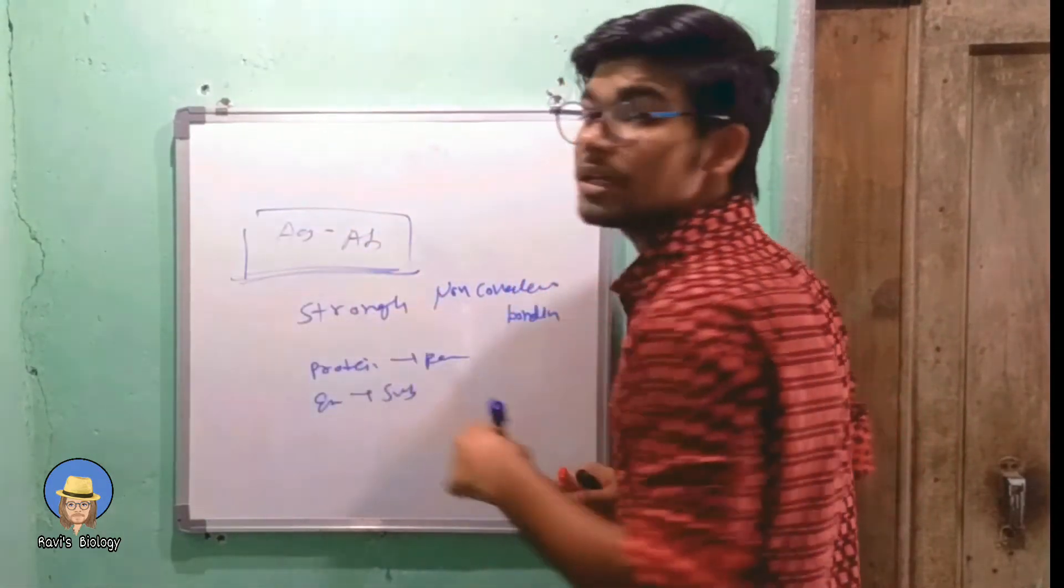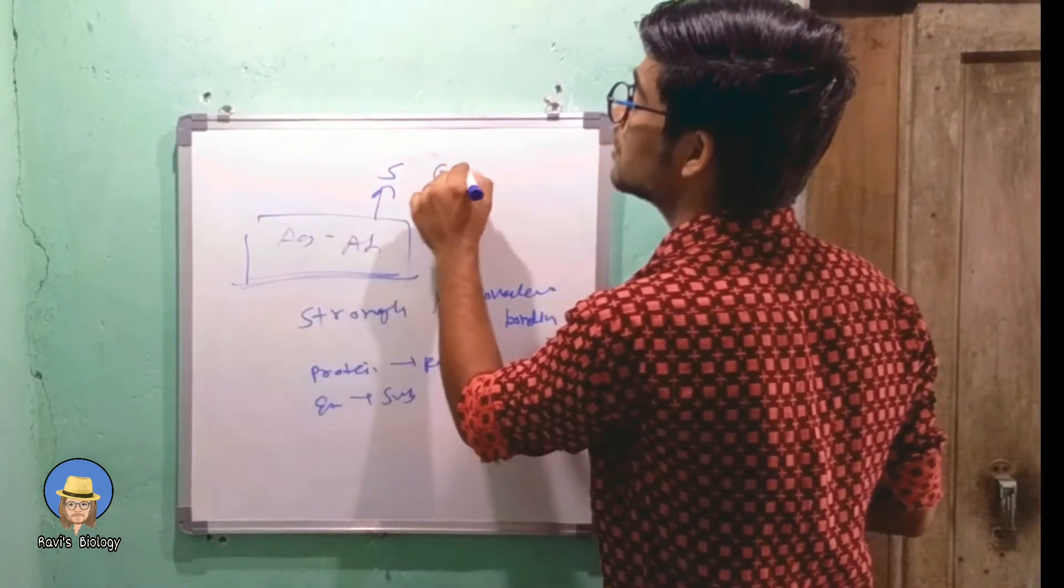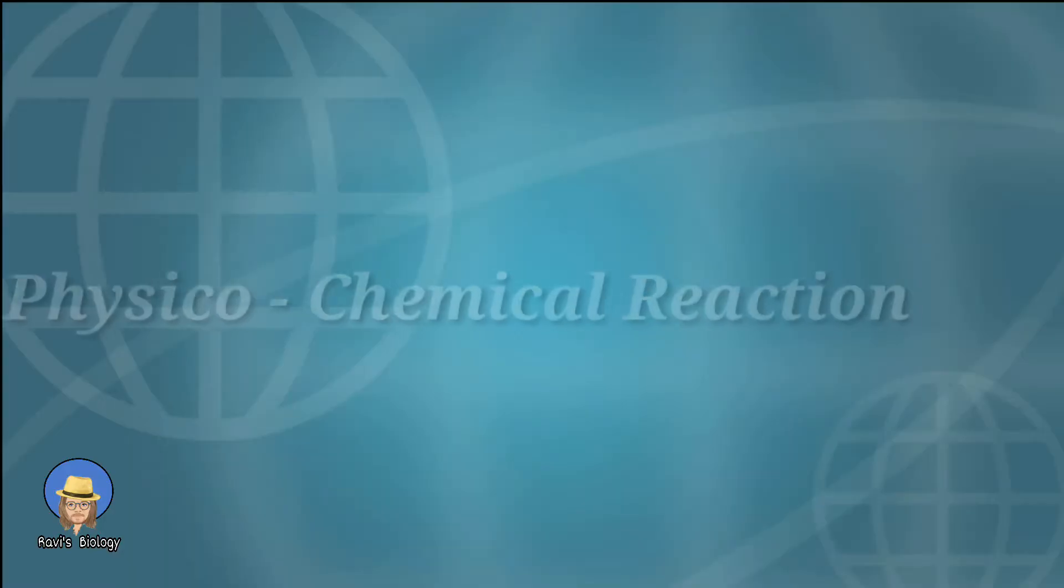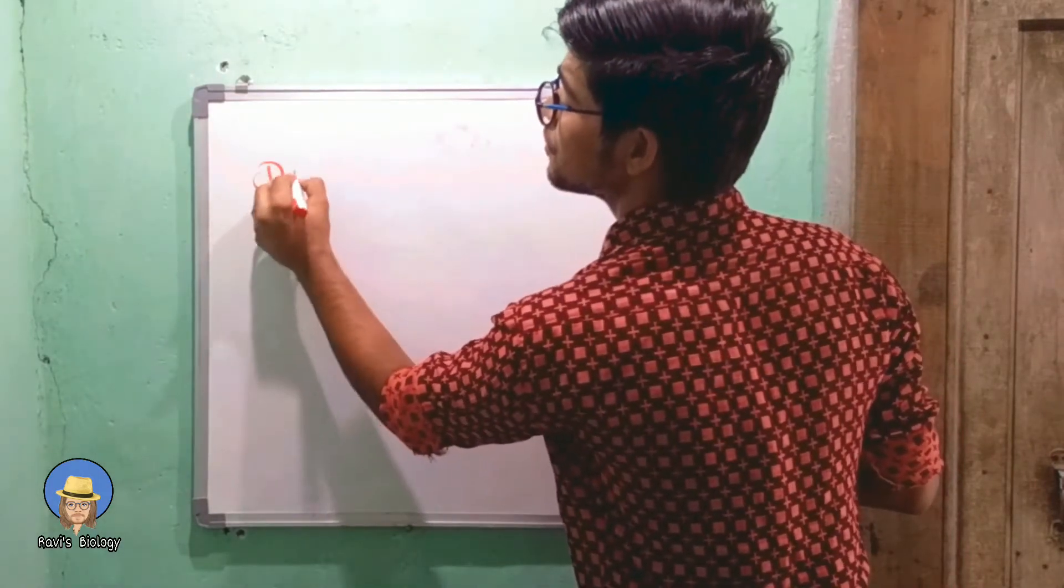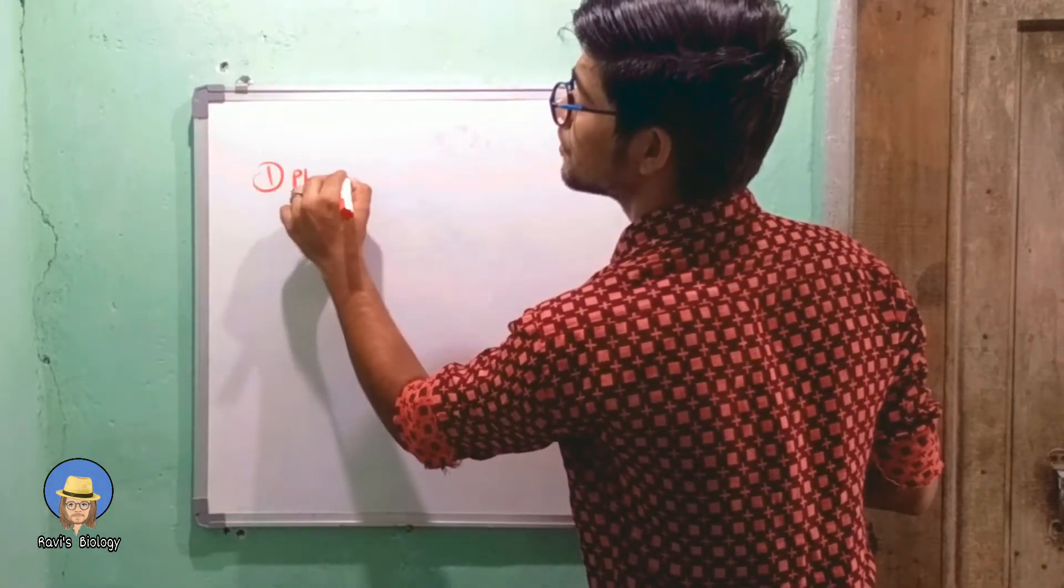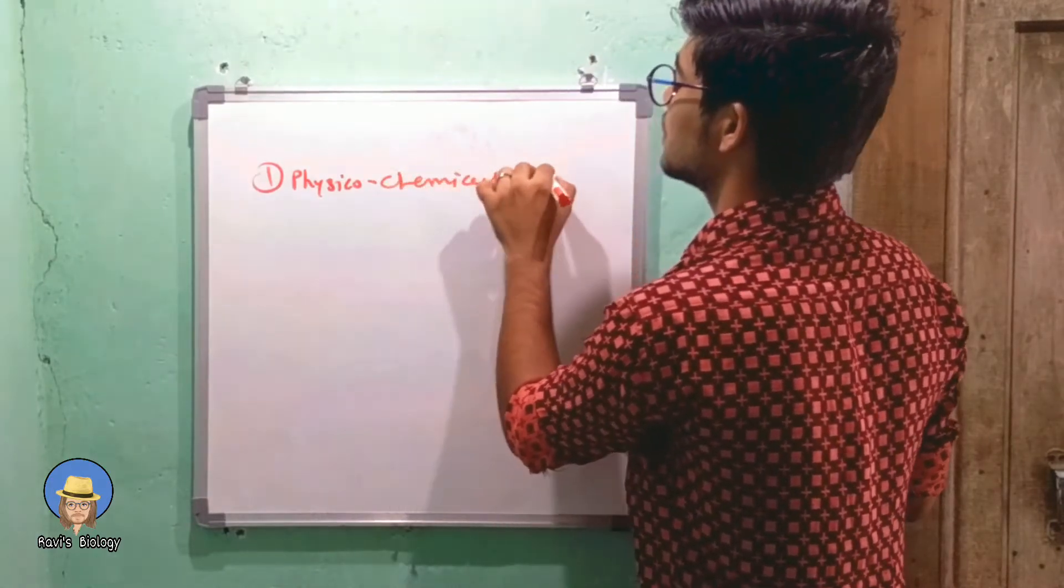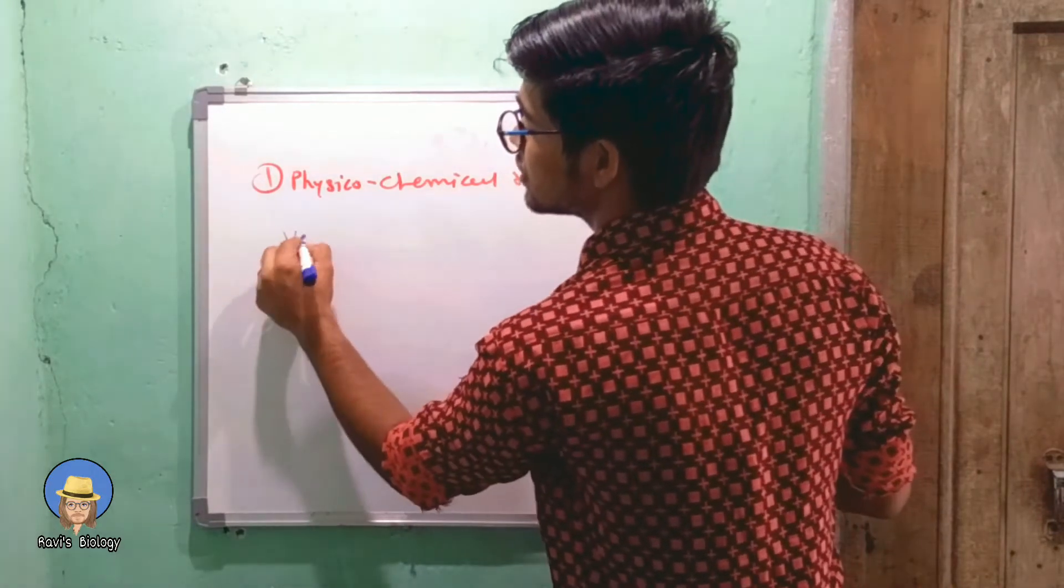The antigen-antibody reaction contains five types of general features. The first feature is physical-chemical reaction. In this reaction, bonds like Van der Waals bonds...